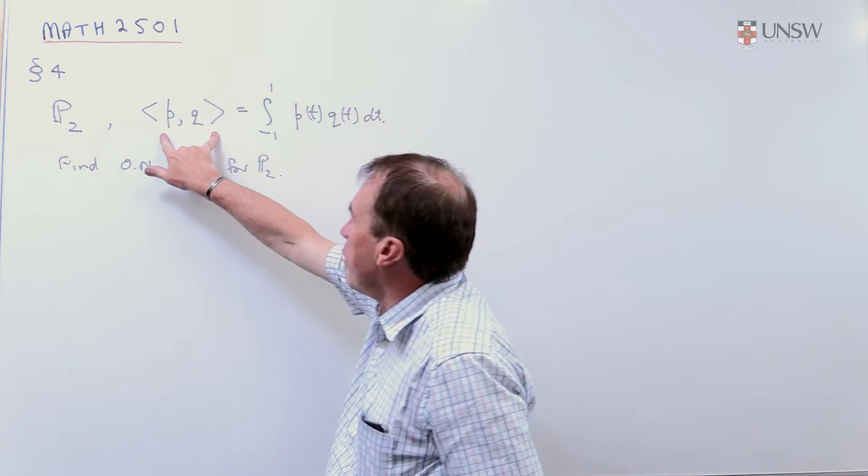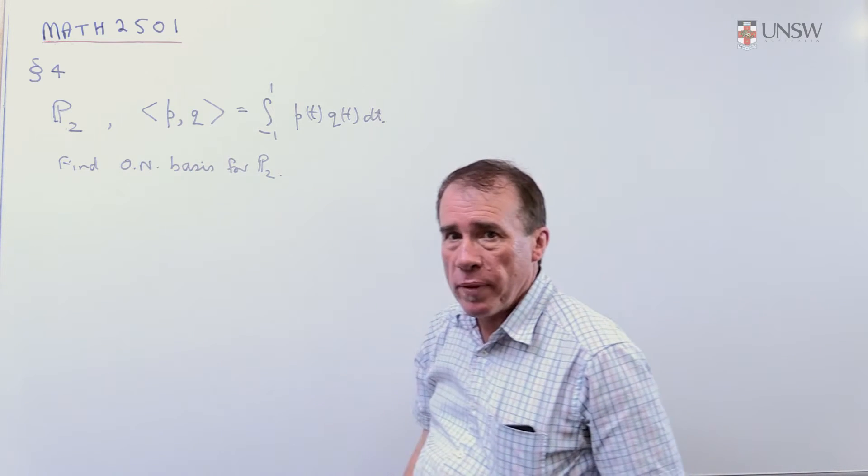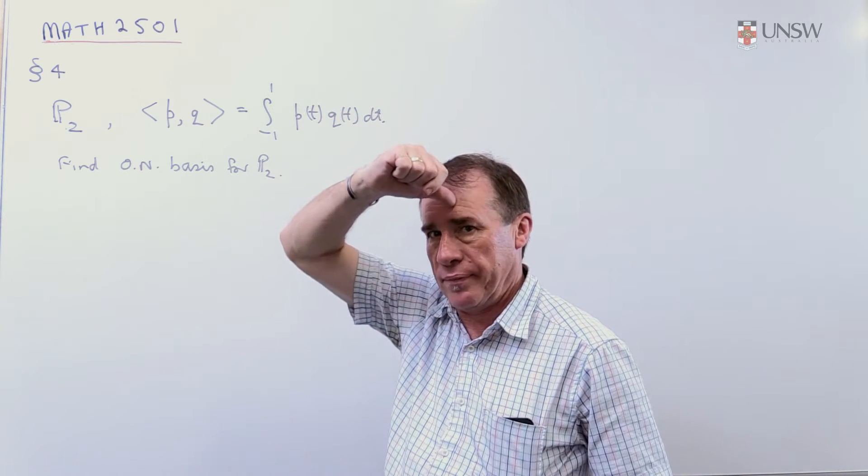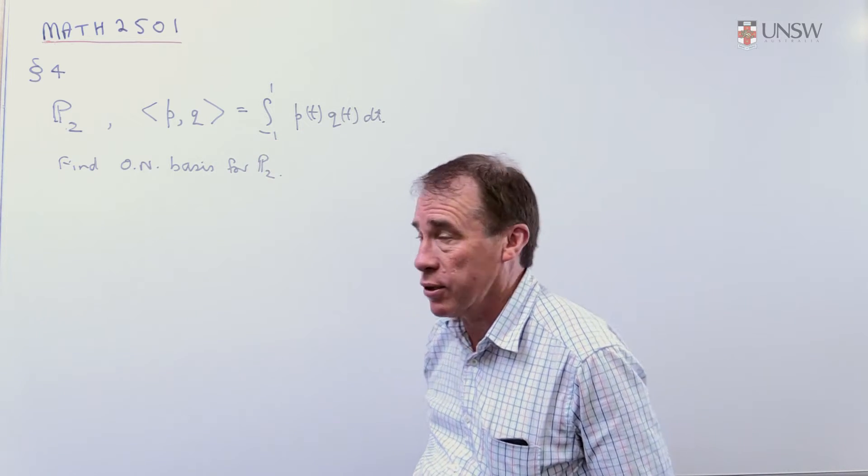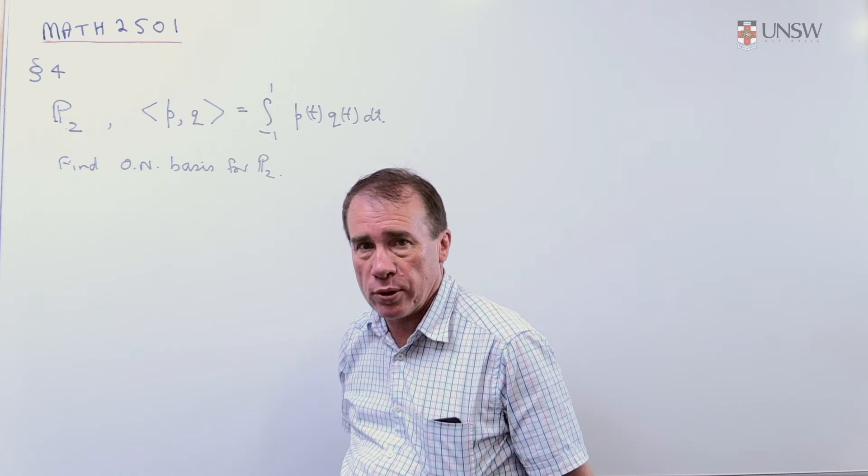We have an inner product defined on this space of two polynomials, P and Q. And the inner product is you multiply them together and you integrate from minus 1 to 1. You might like to check that this actually does define an inner product on this space. We're going to find an orthonormal basis for P2.